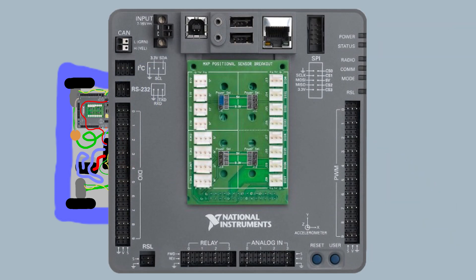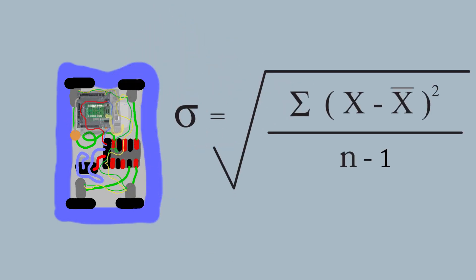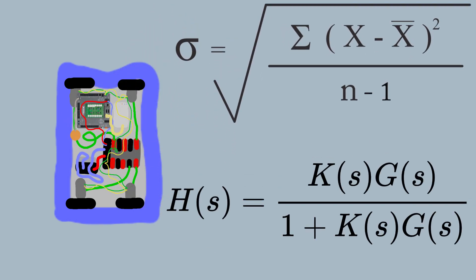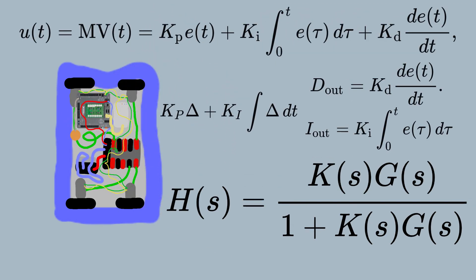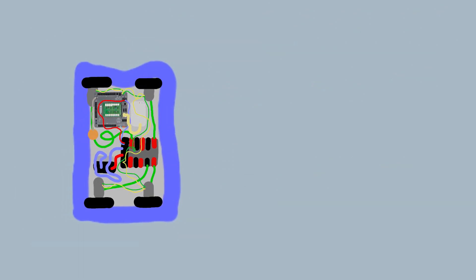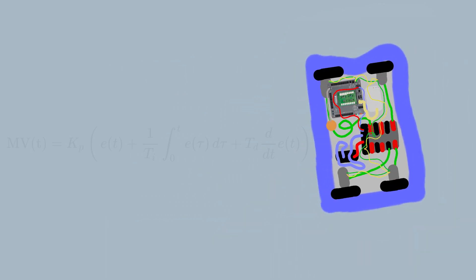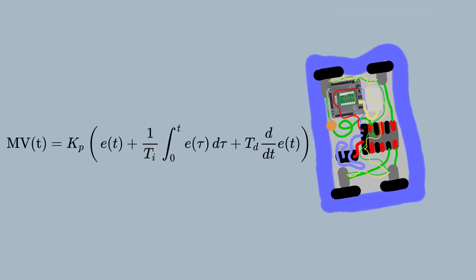The guidance subsystem uses deviations to generate corrective commands to drive the robot from a position where it is to a position where it isn't, and arriving at a position that it wasn't, it now is, through the use of PID.